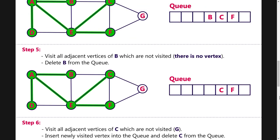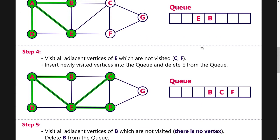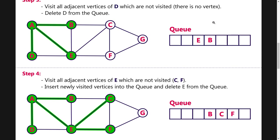Once D is deleted, we move to the next node. After D, E and B are in the queue. We visit node E, which has adjacent nodes A, B, C, F, and D. But A, B, and D have already been visited, so only C and F are unvisited. We insert C and F into the queue. The nodes inserted into the queue are marked as visited, and at the same time, we delete node E.